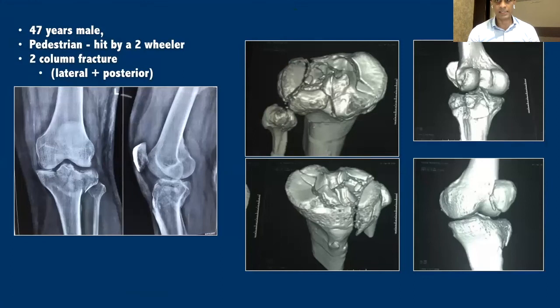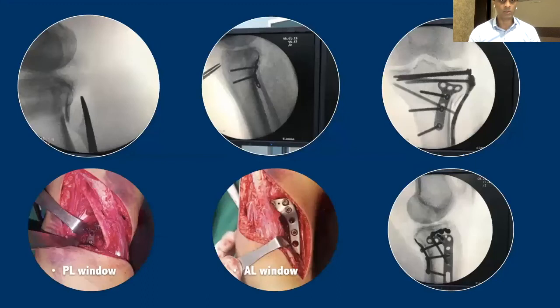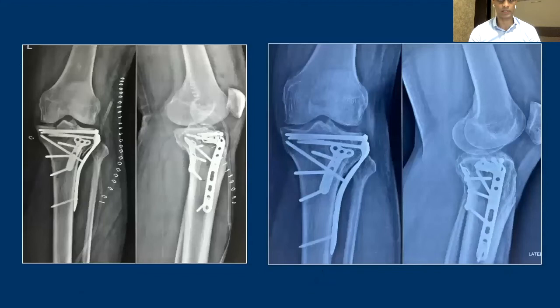Looking at this next example, you can see the posterolateral depression as well as the posterior lateral rim broken. The fracture extends into the lateral column and there is a medial break as well. With the posterolateral rim broken, this patient requires a direct buttress of the posterolateral rim, so direct exposure is needed. We did a Frosch approach: the first step was to reduce and secure the posterolateral fragment with a small T buttress plate, then complete the anterolateral fixation through the lateral window using a stronger buttress plate. The result was satisfactory even without addressing the medial side.